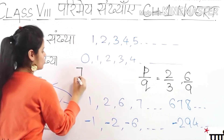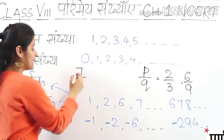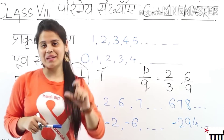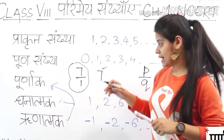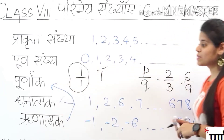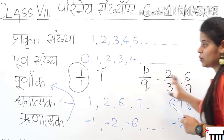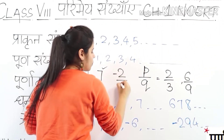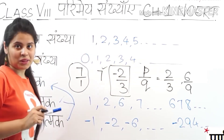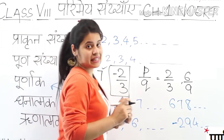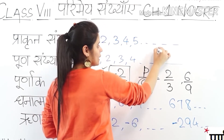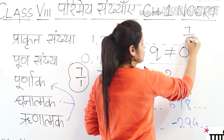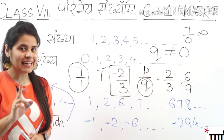Yes, 7 is a Parime Sankhya because we can write it as 7 over 1. We can also write it as 8 over 1, and so on. However, if the denominator is 0, then we cannot call it a Parime Sankhya.